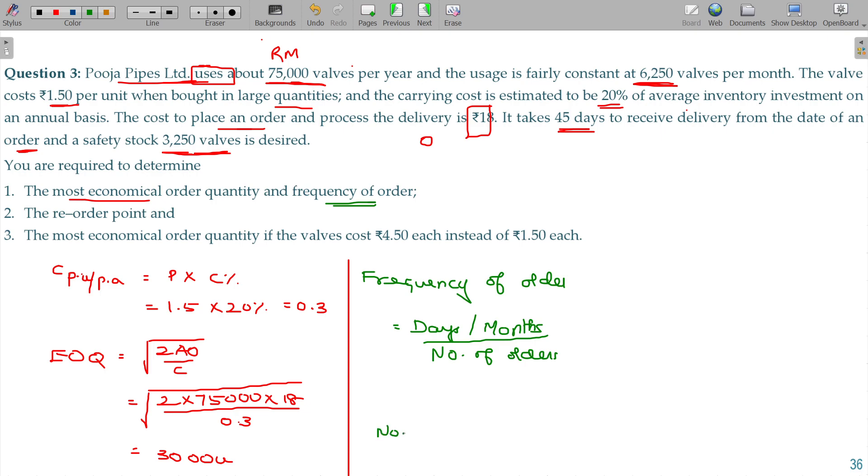Number of orders is annual requirement divided by quantity per order. My annual requirement being 75,000 units, every time I order 3,000 units, so the number of orders is 25 times.